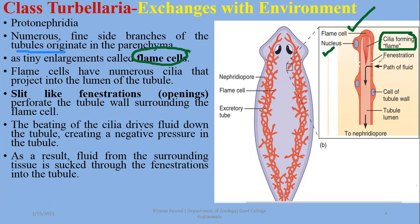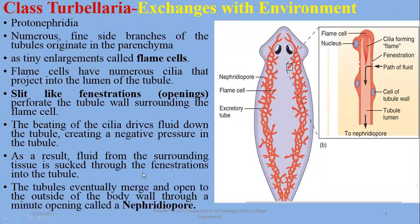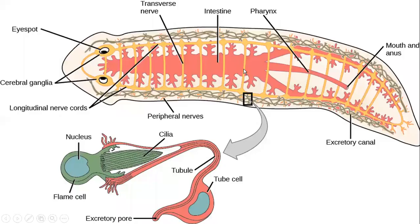Flame cells have a nucleus, and they have small openings or fenestrations — slit-like openings — surrounding the tubule wall. From the cilia, the contents move towards the excretory tubule, the main tube of excretion. As a result, fluid from the surrounding tissue is sucked through the fenestrations into the tubule. The tubules eventually merge and open to the outside of the body wall through a minute opening called the nephridiopore. This system is mainly to filter nitrogenous waste.